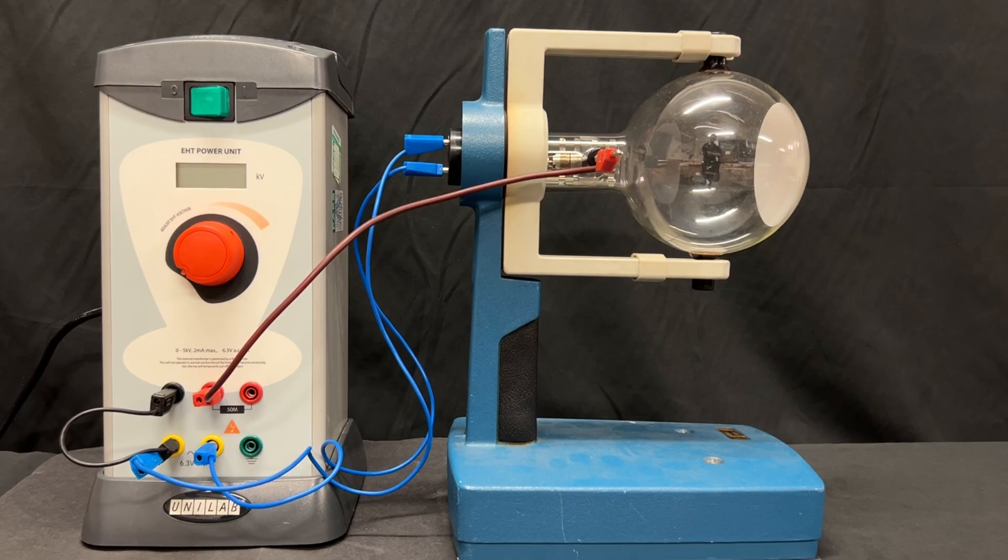On my vintage tube, you don't have a separate connection for the negative of the EHT. That just goes on to one of the low-voltage outputs. But on some more modern tubes, it has a separate connection.